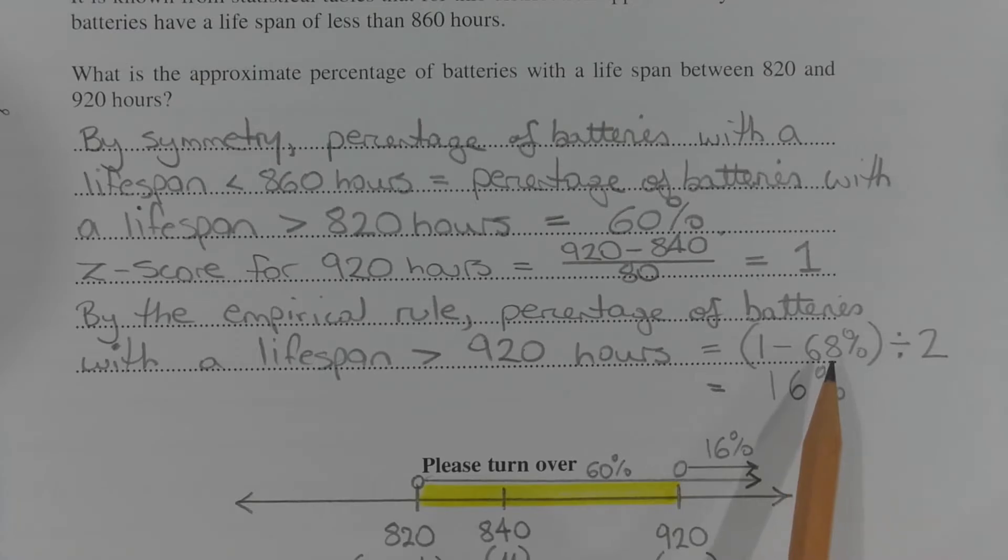68% corresponds to the area under the normal distribution from Z equals negative 1 to Z equals positive 1. So 1 minus 68% corresponds to the area in both tails, which is why we need to divide it by 2 to get the area in the upper tail above Z equals 1.